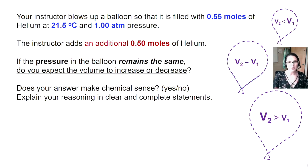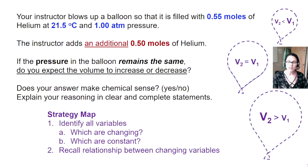If you weren't able to start the question on your own, I'll provide you with a strategy map. First, let's identify all of the variables, which are changing and which are constant. Then, we'll recall the relationship between the changing variables to let us predict if our volume is going to increase or decrease after more moles of helium were added to the balloon.